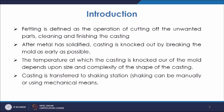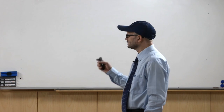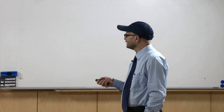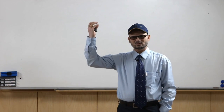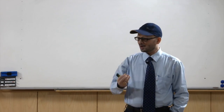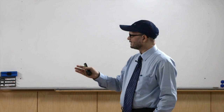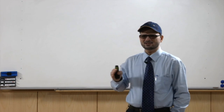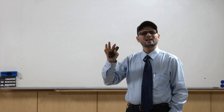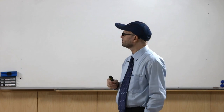The fettling process is carried out in different stages. The first stage is knocking out of dry sand cores — the dry sand cores used to create internal cavities or internal features are removed. Then you remove the gates and risers, because through the sprue cup and pouring basin the molten metal flows through runners, gates, and risers — all of these are to be removed.